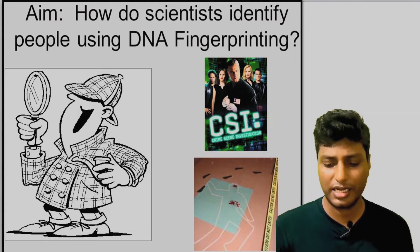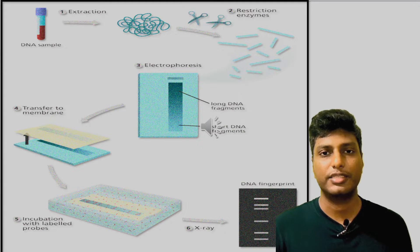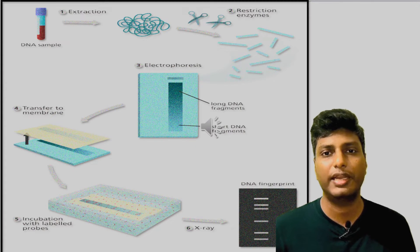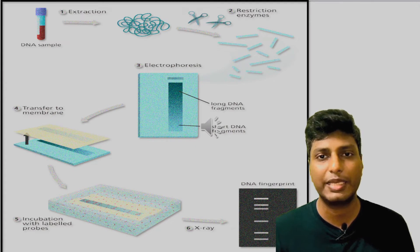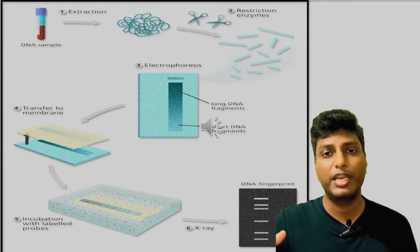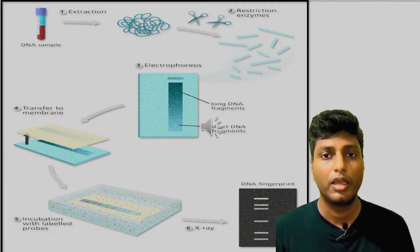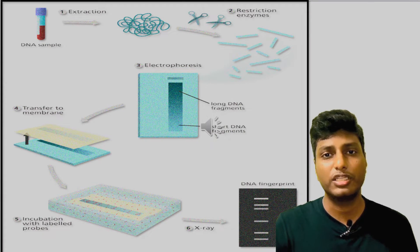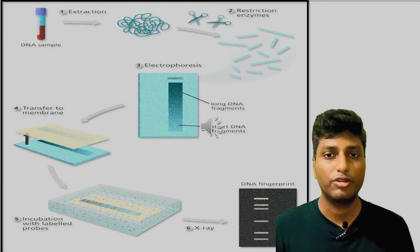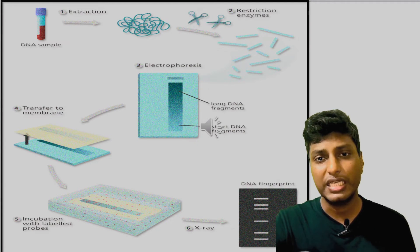Let's understand the different steps of DNA fingerprinting. The very first step is that DNA from the source is collected. A source can be a blood sample, a hair sample, a nail sample, or a sample from any part of the body. Once the DNA is collected, it is broken down into many fragments with the help of special enzymes known as restriction enzymes. In the next step, these DNA fragments are separated on a gel made up of agarose — a technique called agarose gel electrophoresis.